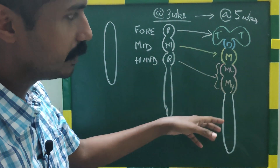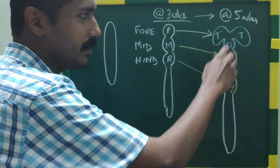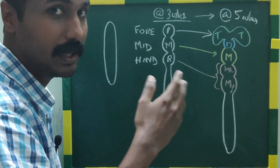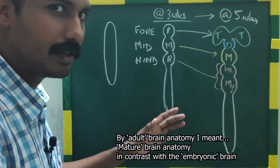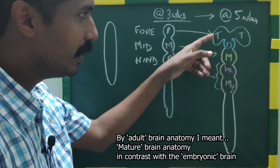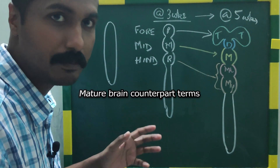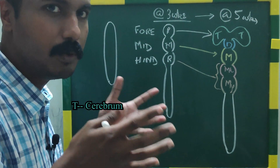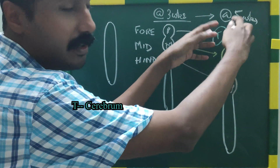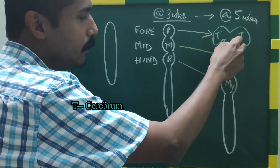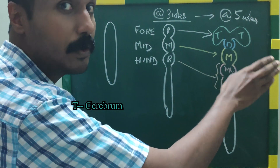At five weeks, our central nervous system is almost like this. You might be getting a bit confused by all these terms, but if you know these terms it is very easy to understand the overview of the brain. Now I will go to the adult anatomy and tell you what the counterparts of the adult human brain are. The telencephalon corresponds to the cerebrum of the brain.